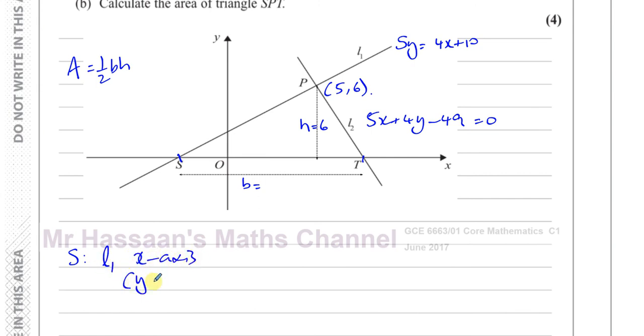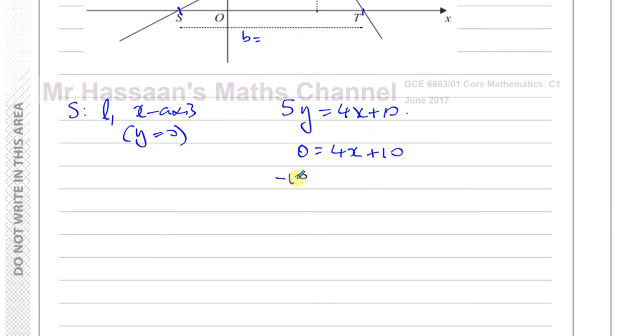So what is the coordinates of point S? It's where line 1 cuts the x-axis, and that's when y is equal to 0. So if we substitute y equals 0 into the equation for line 1, 5y equals 4x plus 10. So we replace the y with 0. You'll get 0 equals 4x plus 10. And then we need to subtract 10 from both sides. Negative 10 equals 4x. So divide by 4. x is equal to minus 2.5. So the coordinates of S are negative 5 over 2 and 0.